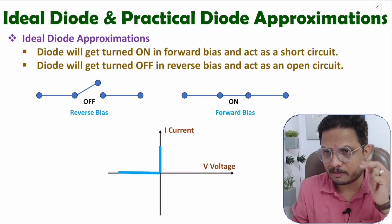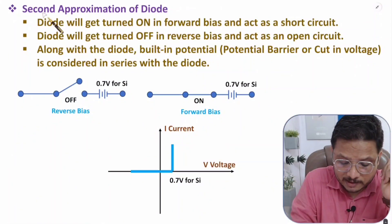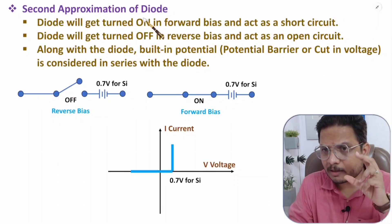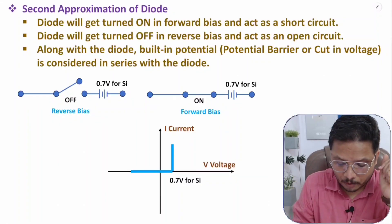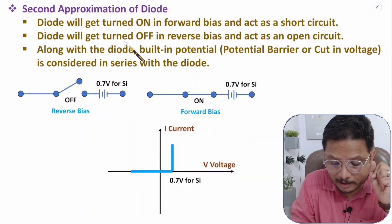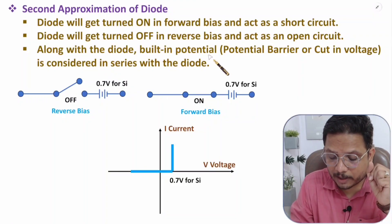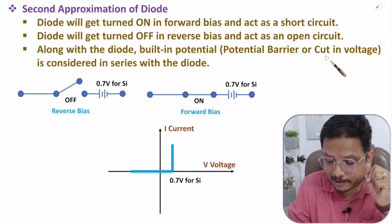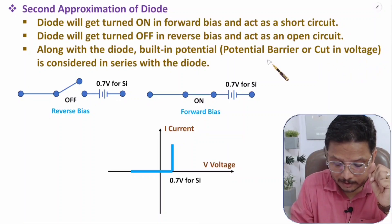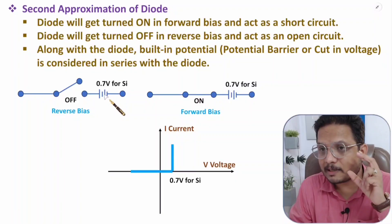That is the ideal diode approximation. Now let us understand the second approximation, which is for practical diodes. In the second approximation we consider built-in potential. The diode will turn on in forward bias and act as a short circuit, and turn off in reverse bias and act as an open circuit.